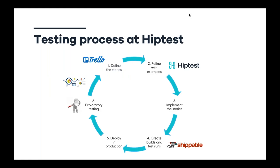Just before starting the demo, I want to share the testing process we use at HipTest. We are a DevOps team deploying between five to ten times a day in production in small increments — that doesn't mean five to ten new features a day. To manage our features and user story backlog we use Trello, and HipTest integrates with Trello, Jira, and any web-based project management tool, including Rally.